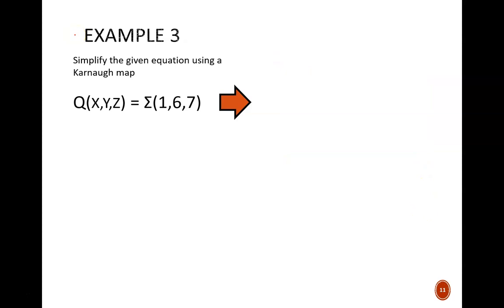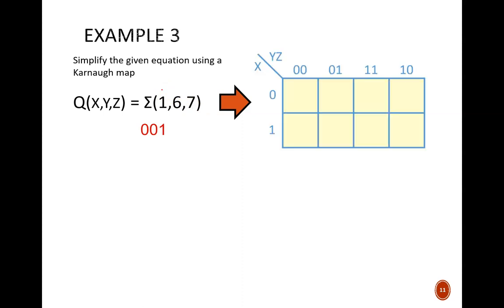Now for one final example. Here, we are given another function in canonical SOP form, but in the shorthand notation. Recall that in this notation, these numbers represent the various min-terms being summed. Min-term 1 will have the input binary code that equals decimal 1, or 001. Thus, square 001 gets filled in on the K-map. Similarly, min-term 6 uses input code 110, so square 110 is filled in. Lastly, min-term 7 uses input code 111.